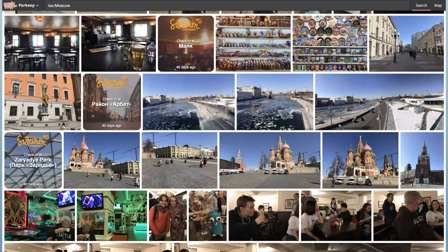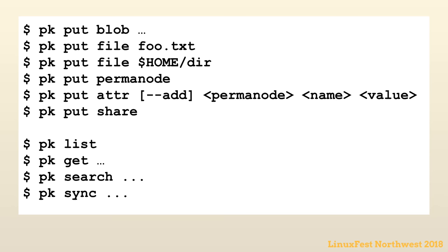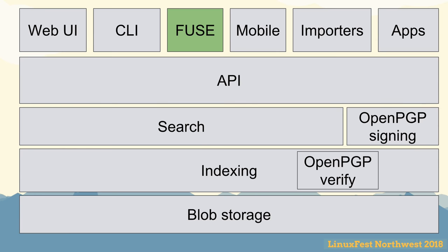Here's a search query for location Moscow, which searches both photos, tweets, and check-ins in Moscow. As an open source project, we also have a command line interface that allows you to do all sorts of things — from low-level access to blob storage, to high-level searches. You can combine commands to automate your workflow. There's also a FUSE interface — if you want your file system, you can mount your whole world and access it as if it's a local machine.